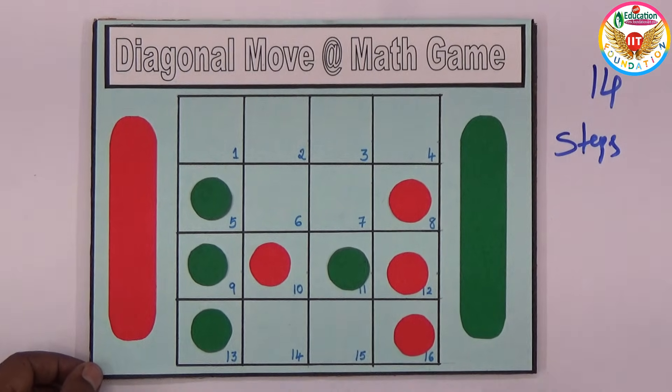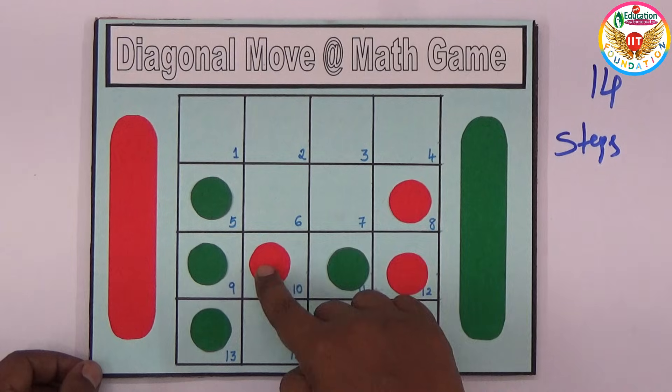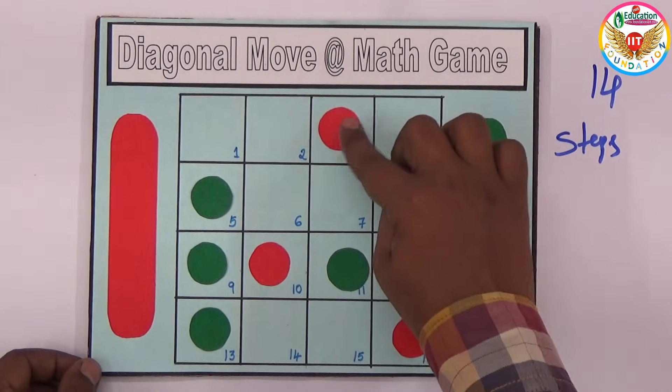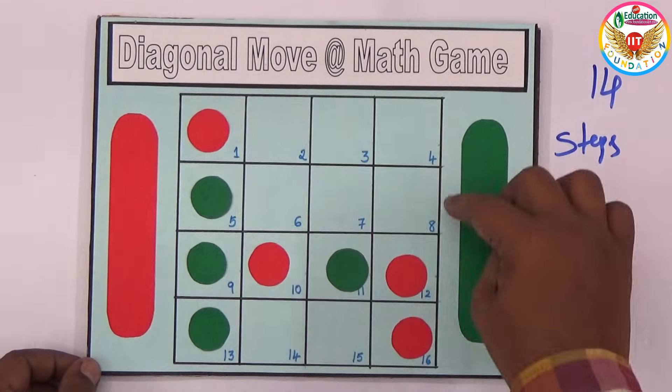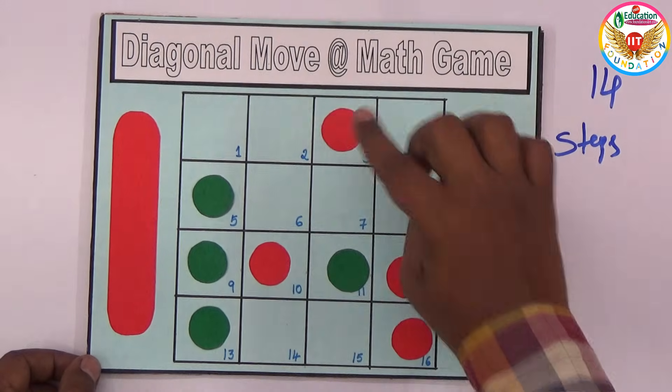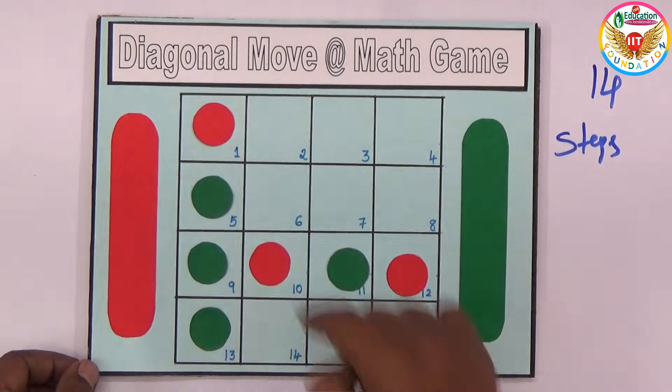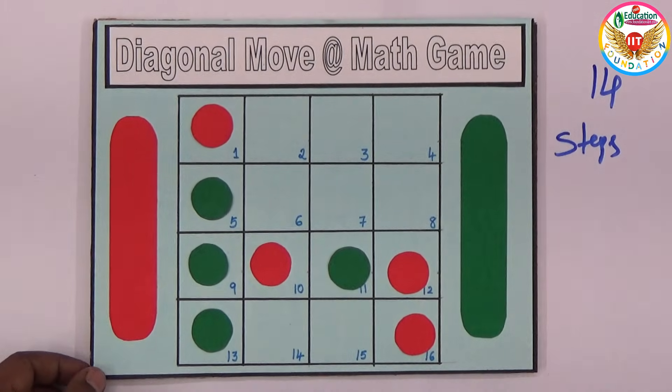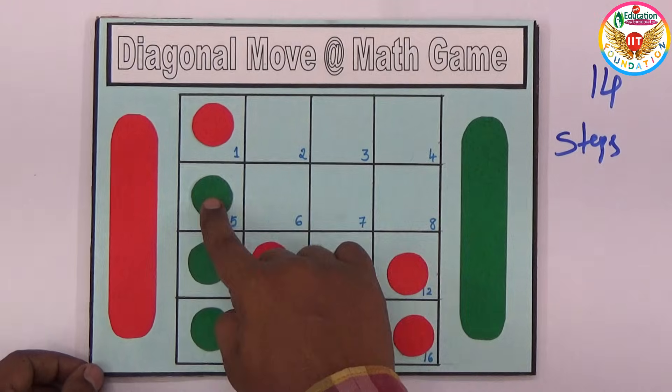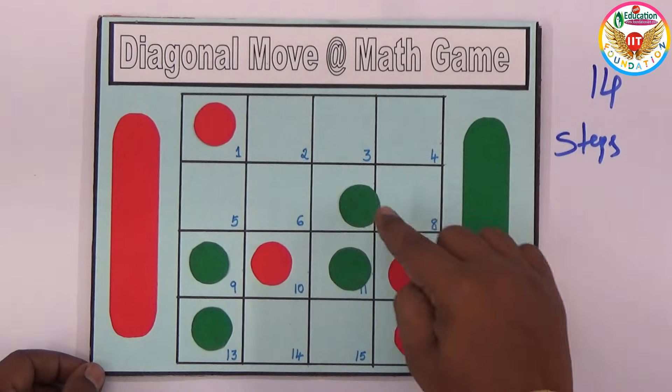Two counts, again three, four, and five. Every move is one step. That's four, again five. So five steps are done. Again six, seven, eight. By eight steps, nine, ten. Ten steps are over. Eleven.